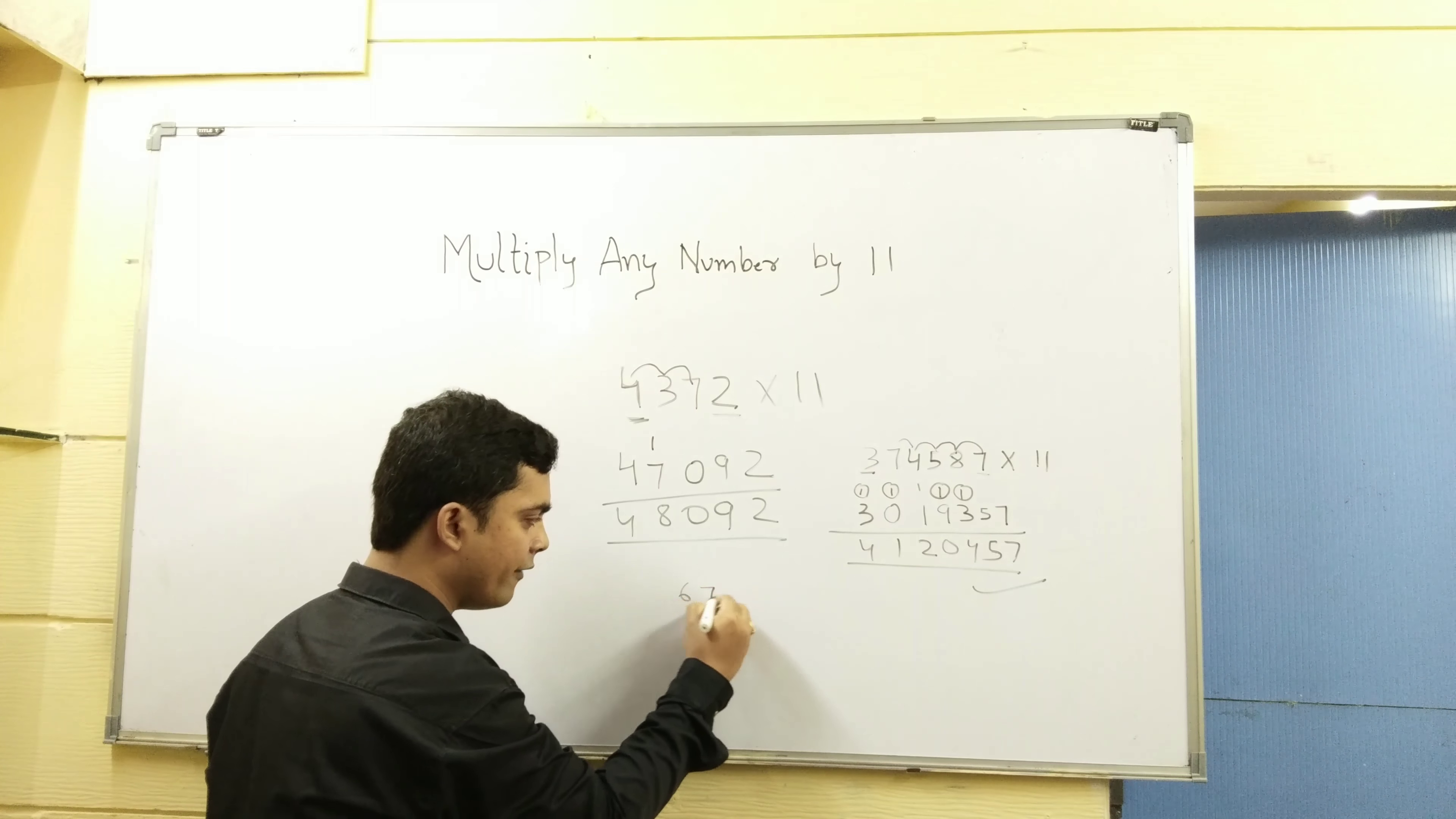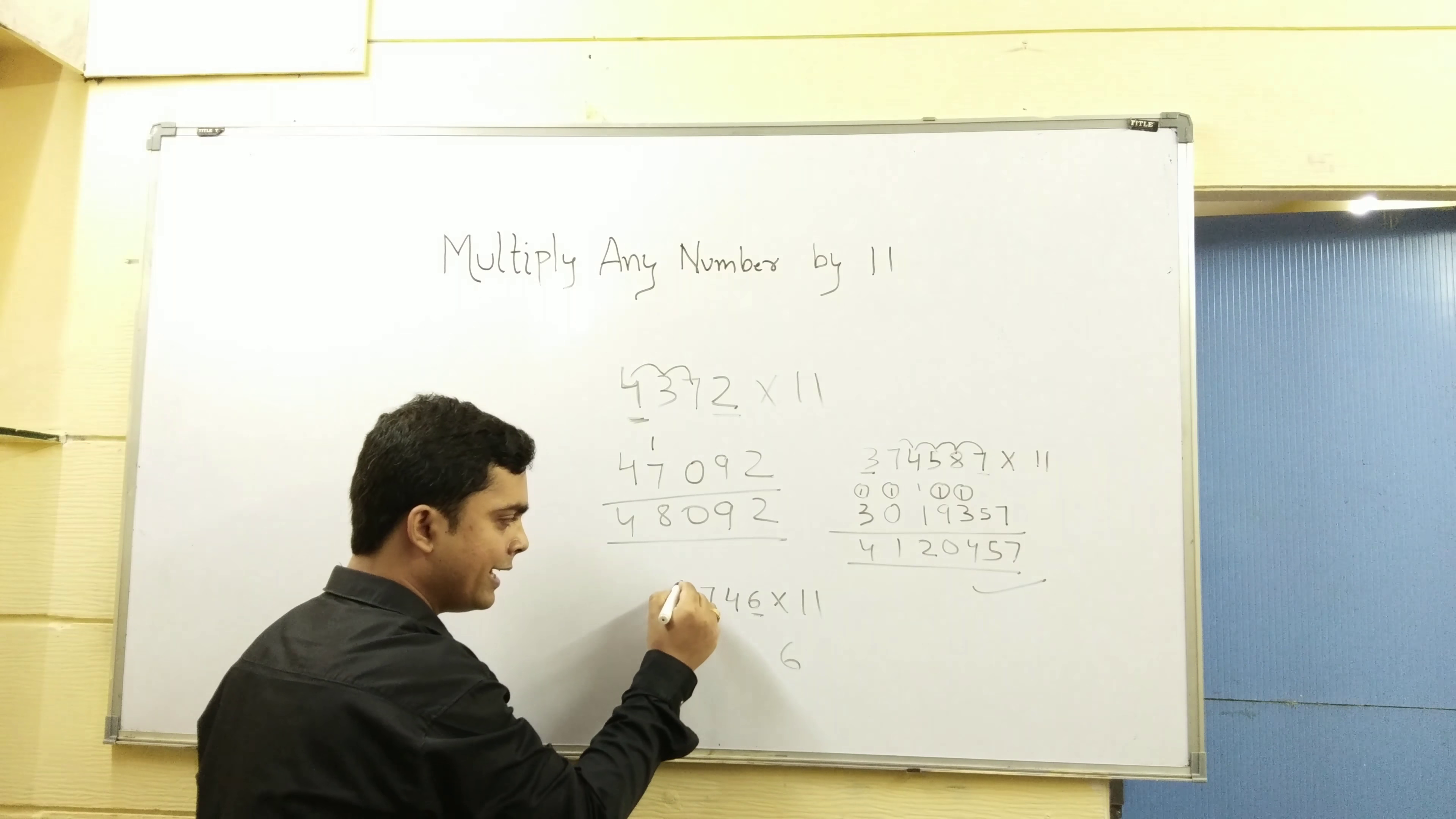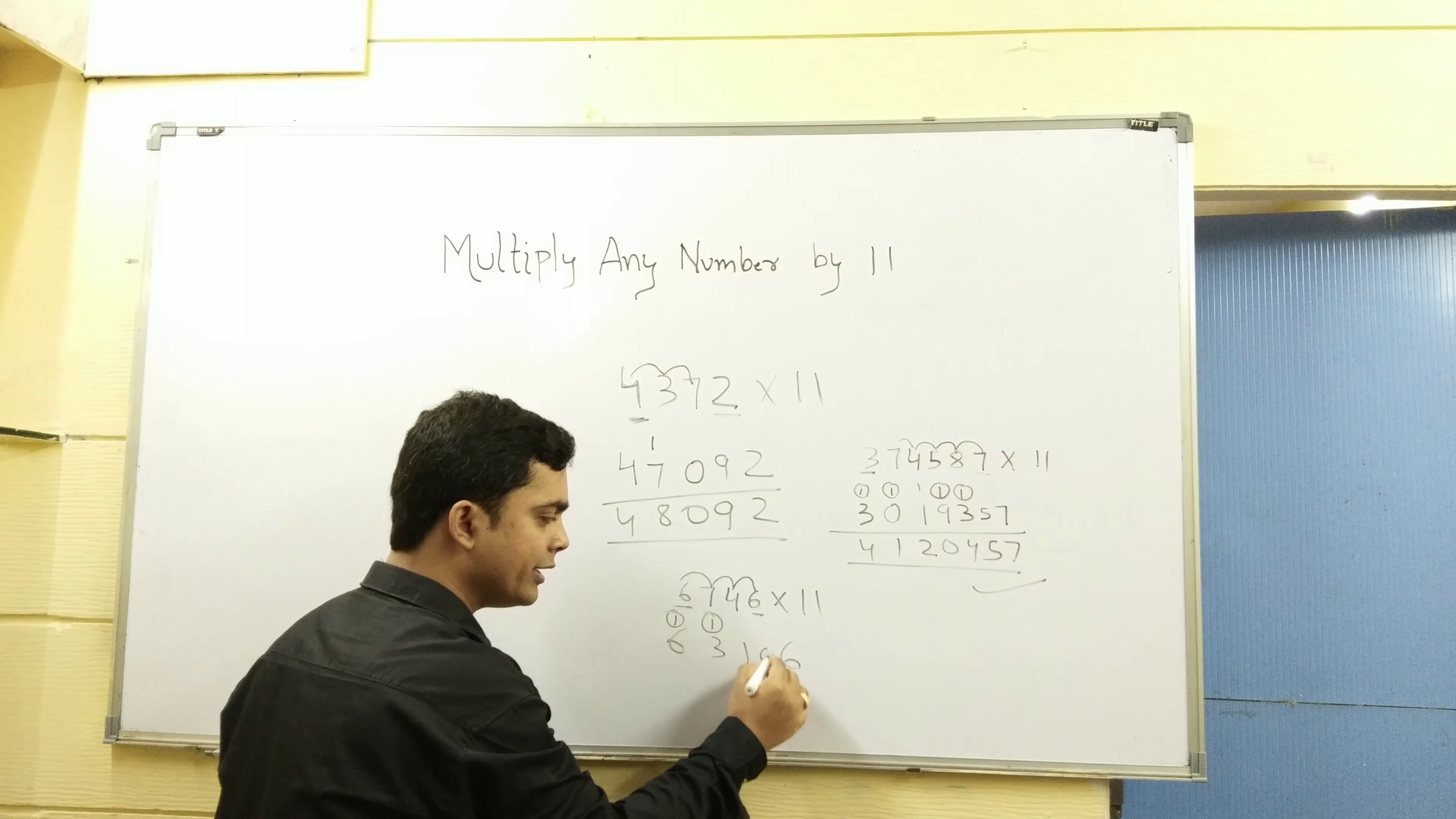65746 multiply 11. First number, last number. 6, 6. 6 plus 7, 13. 3 carry. 7 plus 4, 11. 1. 4 plus 6, 10. 1.